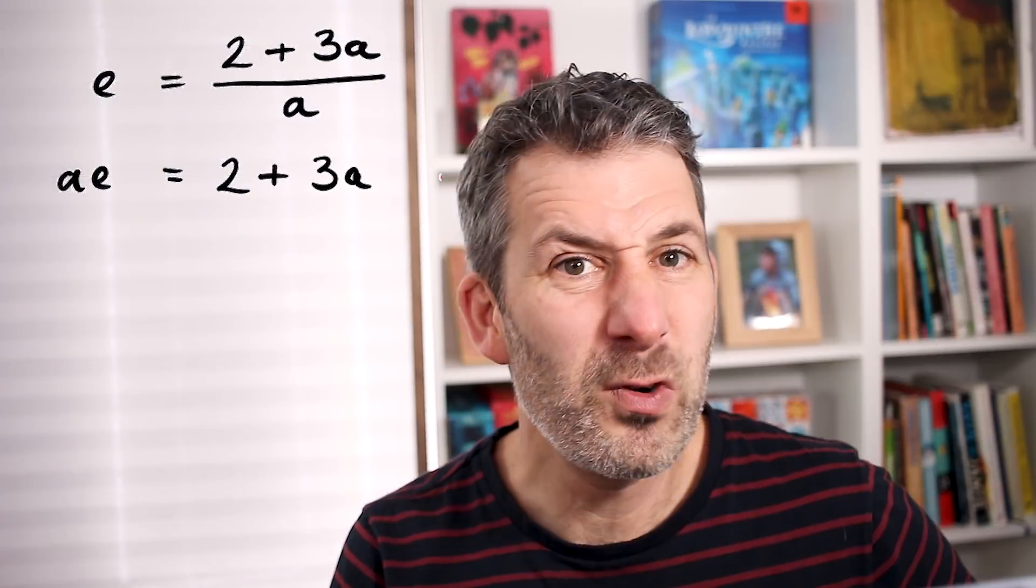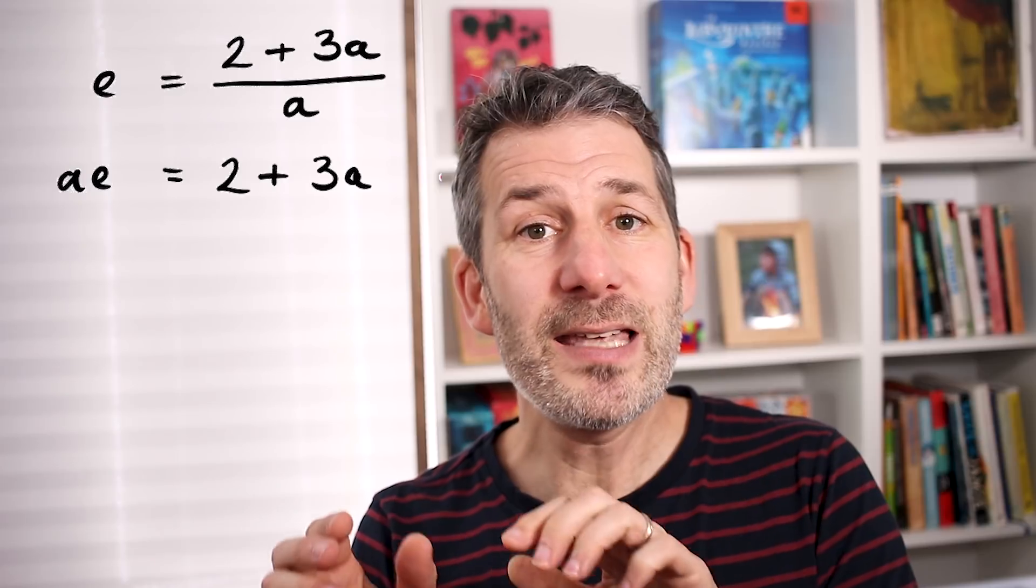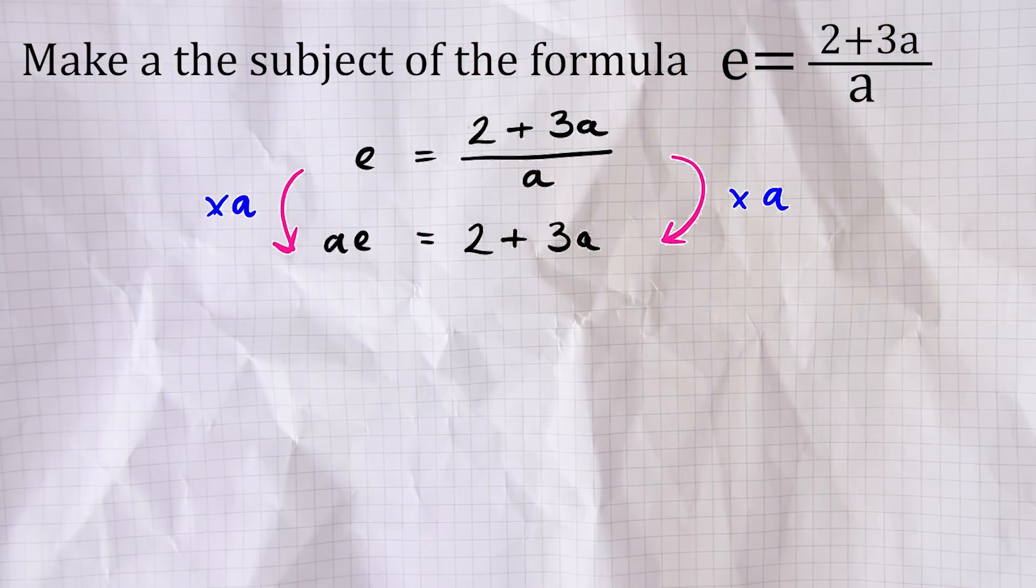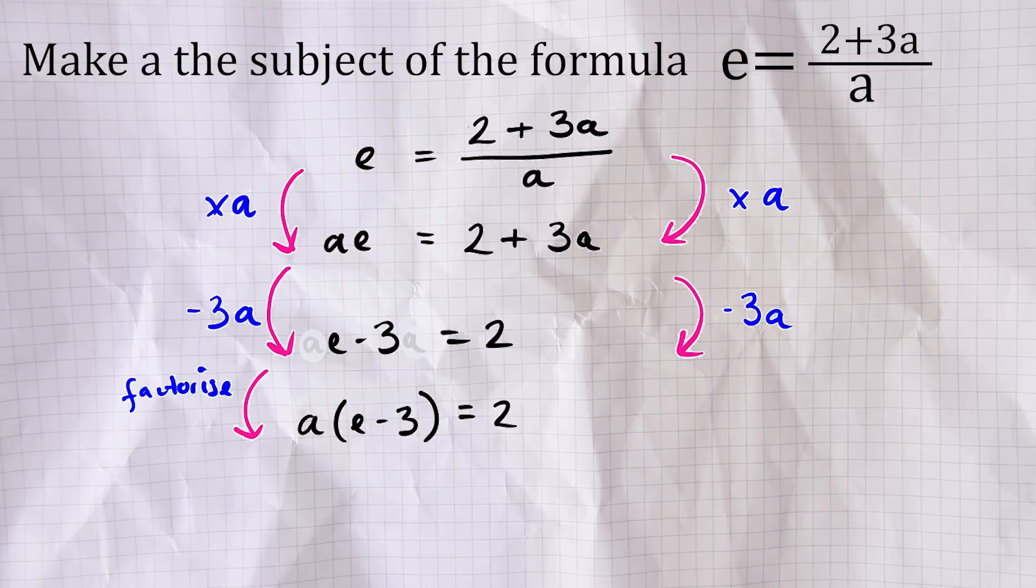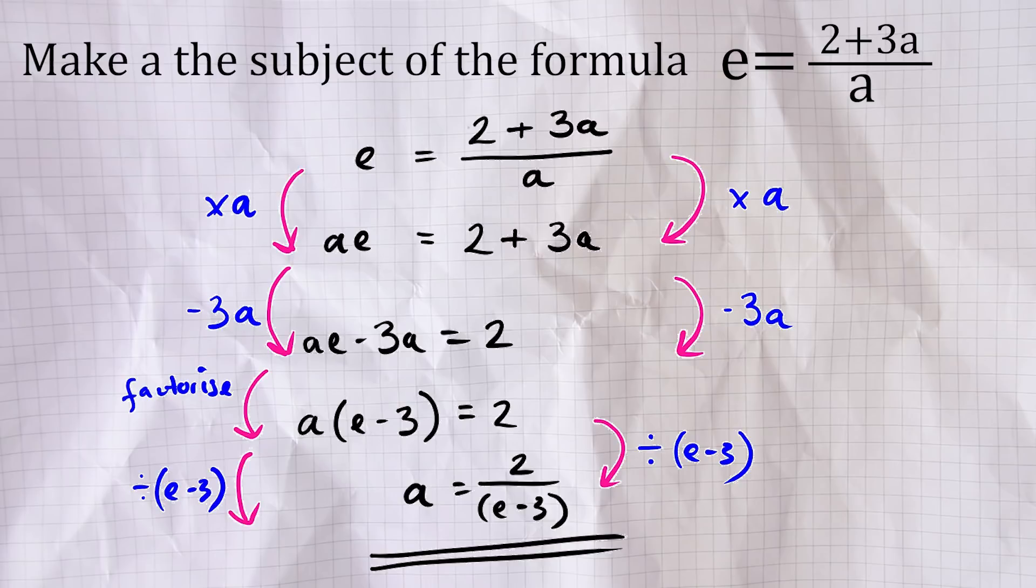And we're back on solid ground, really very similar to the last example. So let's get all the bits that include an A together on one side. So we could subtract 3A from the right-hand side to give us AE minus 3A equals 2. And then the clever bit, we factorize. A is obviously the common factor there. So that goes outside the bracket. And whatever is left when we take that out is what goes inside. So in this example, E minus 3. Now we have A in brackets, E minus 3 equals 2. The final step, as before, is to divide both sides by whatever is in the bracket. In this case, E minus 3. And we finished. A equals 2 over E minus 3.